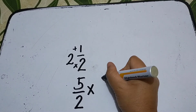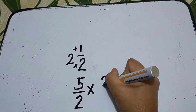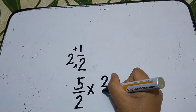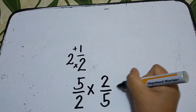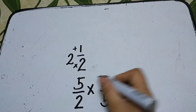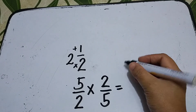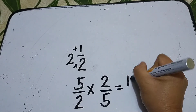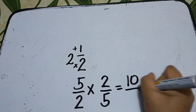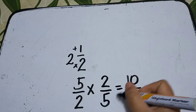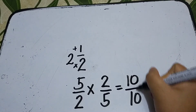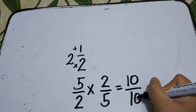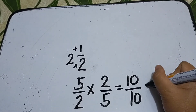Then we multiply 5 over 2 by its reciprocal, which is 2 over 5. So 5 times 2 is 10, and 2 times 5 is 10, giving us 10 over 10.